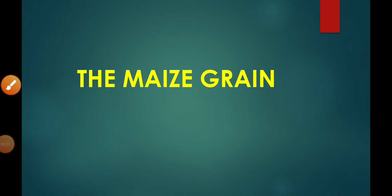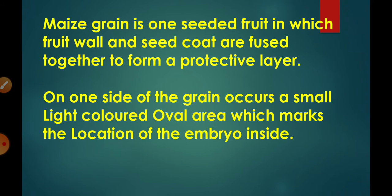In the previous video we studied about the structure of a bean seed, or a dicot seed. In this video we will study about the structure of a monocot seed, or we can say the structure of a maize grain. Now, what is a grain?